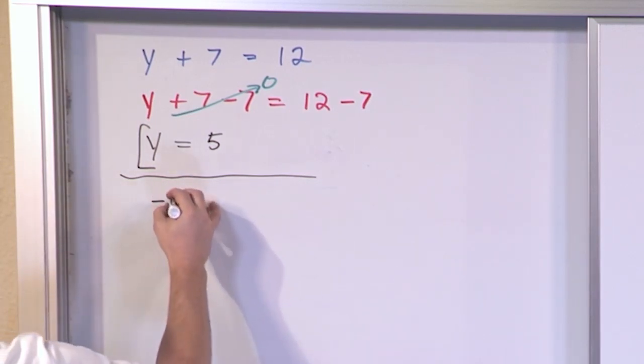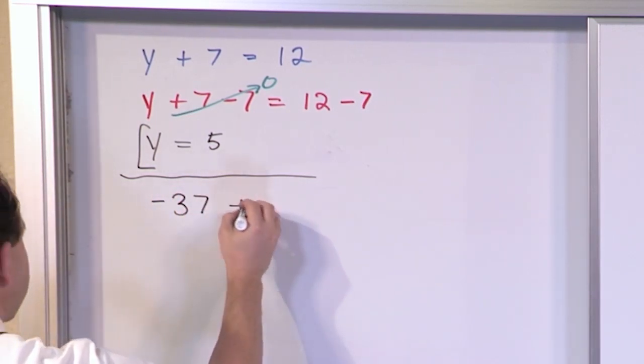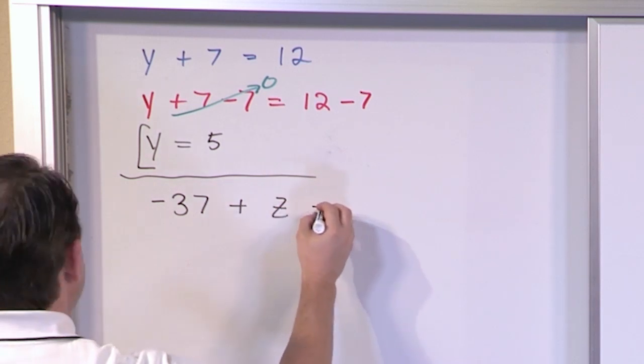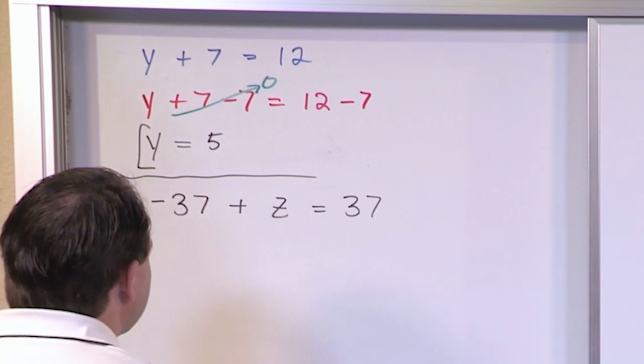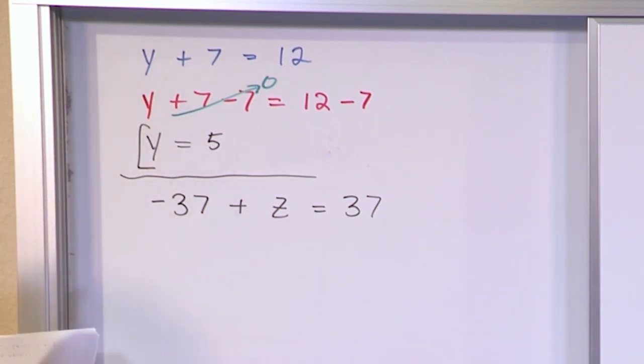All right, what if we have something a little bigger? Negative 37 plus z is equal to 37. How do we solve for z? We're trying to find out what this is equal to. Now we have this negative 37 sitting over here. We don't like that. The only way we can really get rid of it is to do the opposite.